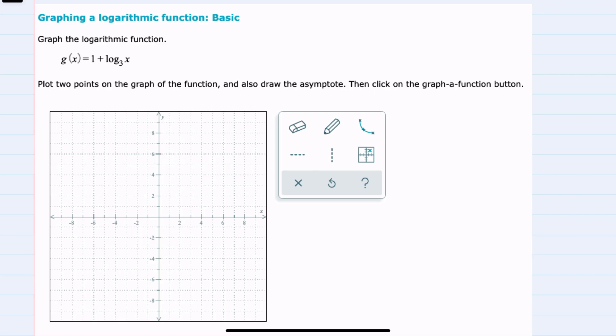Here we have the function g of x. We're asked to plot two points to graph the function, and then also draw the asymptote. So I'll use a table to represent the two points that I'm finding. And since I'm choosing x's to substitute in, I can choose values of x that make the logarithm easy to calculate.